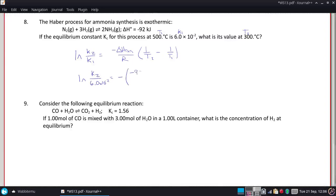The heat of reaction is going to be negative 92,000 joules. Our R is 8.314. And then T2 is 573 Kelvin, and T1 is 773 Kelvin.